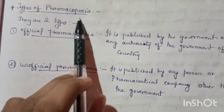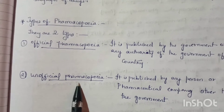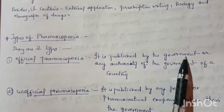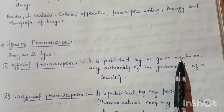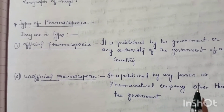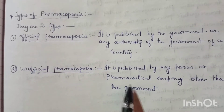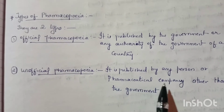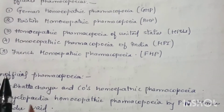There are two types of pharmacopoeia: official pharmacopoeia and unofficial pharmacopoeia. Official pharmacopoeia is published by the government or any authority of the government of the country. Unofficial pharmacopoeia is published by any person or pharmaceutical company other than the government. We have learned there are official pharmacopoeia and unofficial pharmacopoeia.